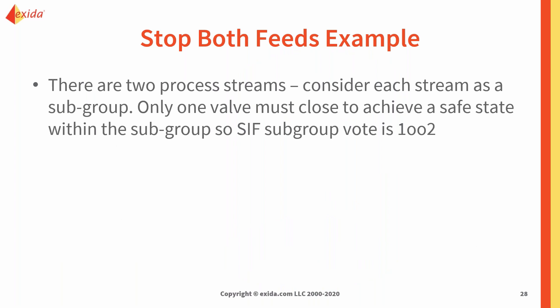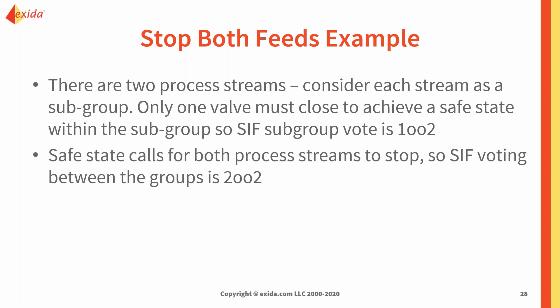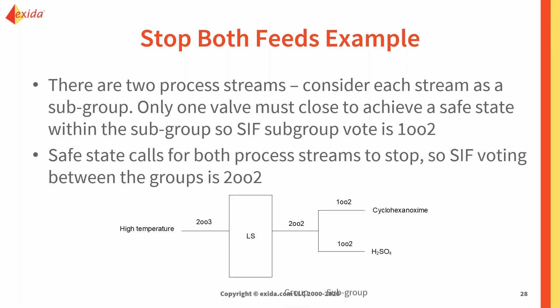We have two process streams, each called a subgroup, decided based on the physical two different flows. We've got two valves in each subgroup, so we can do one out of two voting within the subgroup. Because we have two subgroups, the overall voting between those groups is two out of two — both have to be successful to achieve the safe state. On a logic diagram, you can see clearly the cyclohexanamine line and the sulfuric acid line, each with one out of two voting, and we need both lines successful.